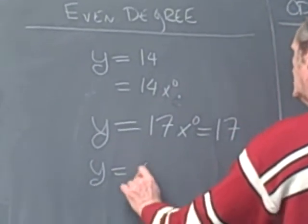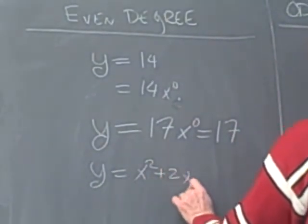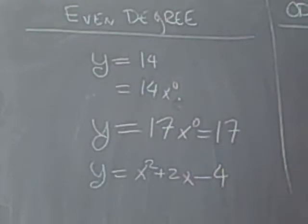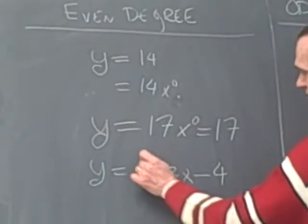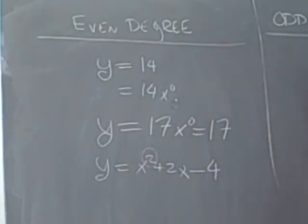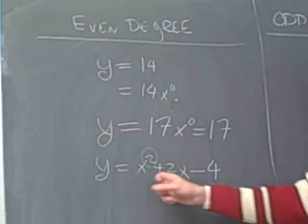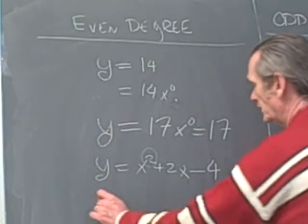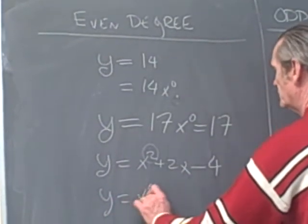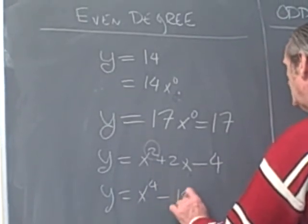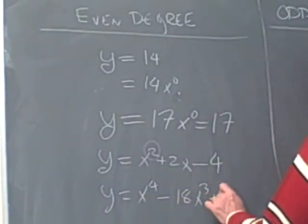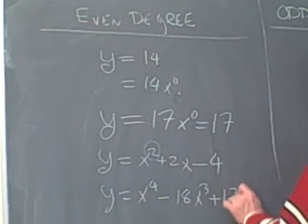If we write y is equal to x squared plus 2x minus 4, that's an even degree polynomial. And the point is that the degree of the highest degree term is even. So it might have odd degree terms. We could have y is equal to x to the 4th minus 18x cubed plus 17x squared minus x plus 2.